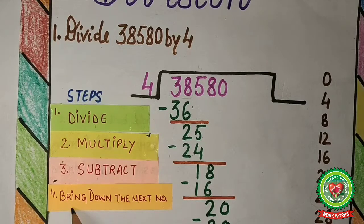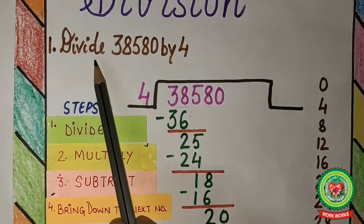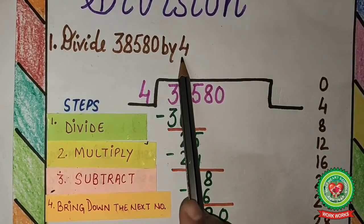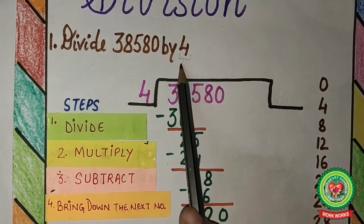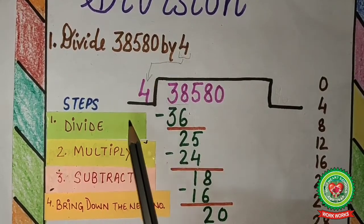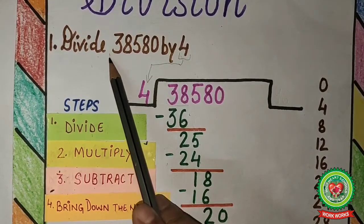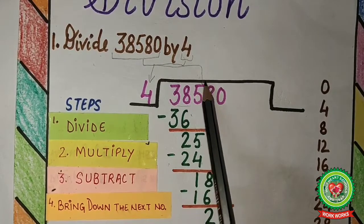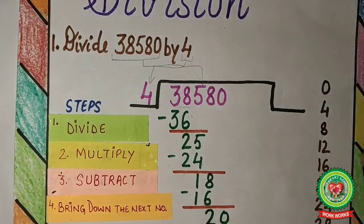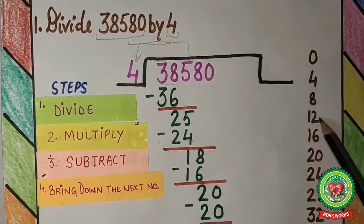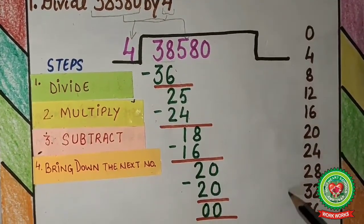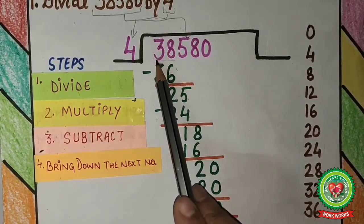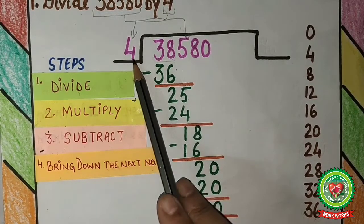Now divide 38580 by 4. Here 4 is your divisor — it comes outside the divide sign — and 38580 is the dividend — it comes inside the divide sign. For our convenience, we write down the table of 4 on the side of the paper. The first step is divide.